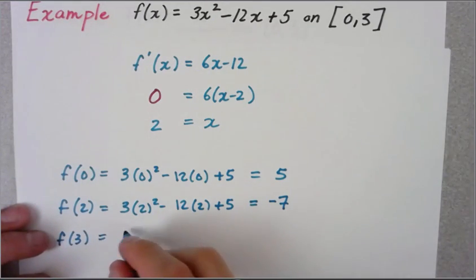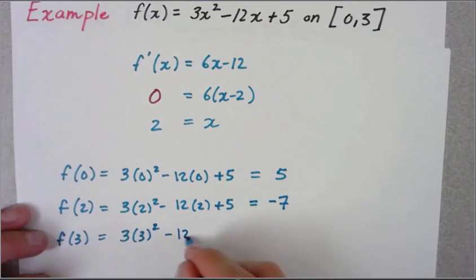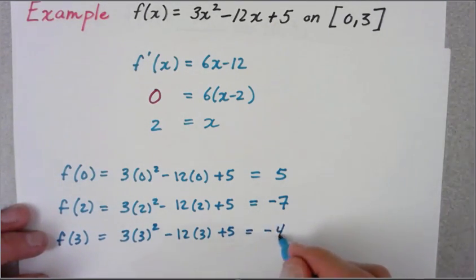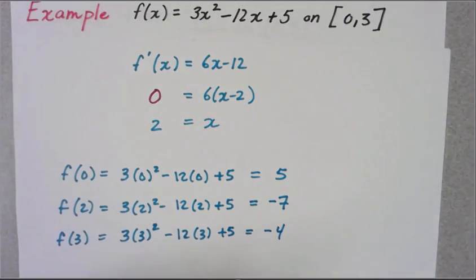Then I look at f(3). When I plug in f(3): 3 times 3² minus 12 times 3 plus 5, and that is going to give me -4.